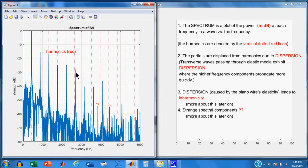Now, this idea of having the partial sharp relative to the harmonics is inharmonicity, and it's a consequence of dispersion, which occurs whenever you have transverse waves traveling through a medium that has elasticity. And the piano wire is definitely elastic. Just like light waves passing through a prism, the higher frequency ultraviolet waves, or the violet waves, move faster than the red waves. We'll get into this a lot more later on.